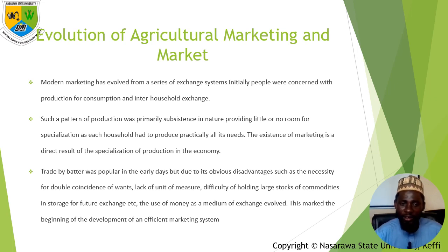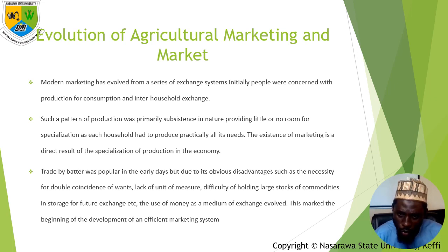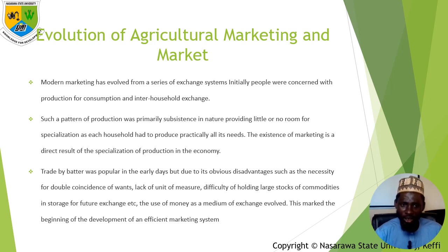Lack of unit of measurement is another factor. For instance, I have yam and you have rice — we want to exchange. How do we exchange? Is it a tuba of yam to a bag of rice? Could it be half a bag of rice to five tubas of yam? Because these two have different forms and nature. And the difficulty of holding large stock of a commodity in storage for future exchange is really another problem. So the use of money as a medium of exchange evolved, and this marked the beginning of the development of an efficient marketing system, equally enabling the specialization of the farming marketing system we have today, as against what it was in the past.